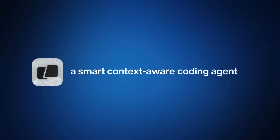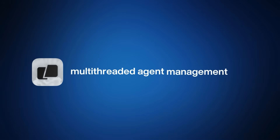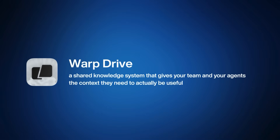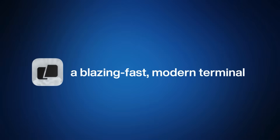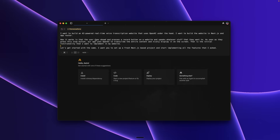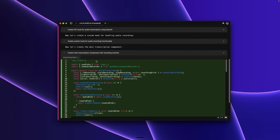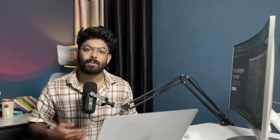Warp 2.0 introduces four powerful pillars: first, a smart context-aware coding agent; second, a multi-threaded agent management system; third, Warp Drive, a shared knowledge system that gives your team and your agents the context they need to be useful; and finally, a blazing fast modern terminal. You can tell Warp exactly what you want to build in plain English or by voice, and the AI agent will code it, build it, and execute it while you stay in full control. It doesn't just write code — it goes through an execution plan that you can approve, deny, or edit.